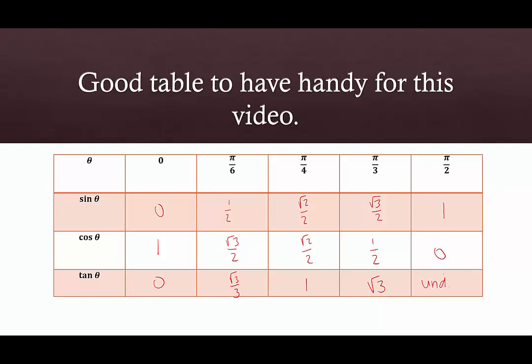Tangent of pi over 2 doesn't exist. So we really want to know this table. If you don't have it written down, I strongly suggest you write it down, because it's really going to help us when we look at our inverse functions.